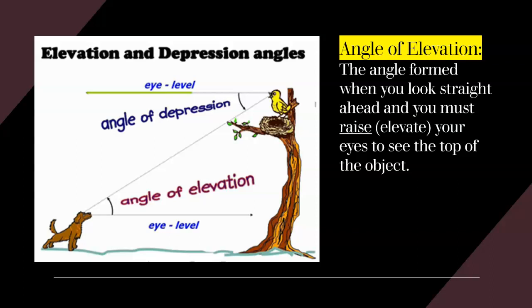So if it's a person looking up at something, it would be the angle formed if they were to look straight across and then look up at whatever they're looking at. That's the angle of elevation.